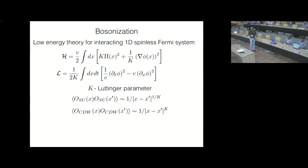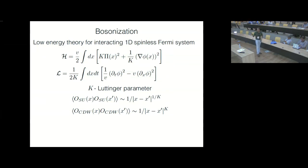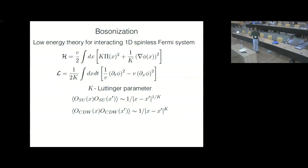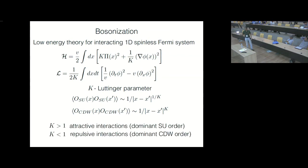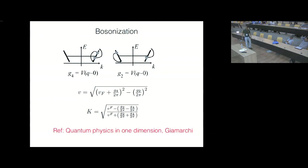K is always a positive number, so whether superconducting order or CDW order dominates depends on whether k is less than or greater than one. If k is greater than one, the superconducting correlations decay slower and the CDW correlations decay faster, and if less than one it's the other way around. K greater than one corresponds to attractive interactions, which is what you'd expect to give superconductivity, and k less than one corresponds to repulsive interactions, giving dominant algebraic charge density wave order.